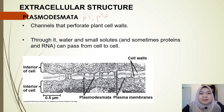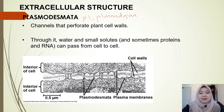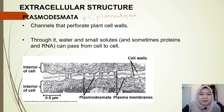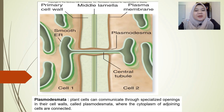Plasmodesmata is the plural noun — the singular is plasmodesma. Plasmodesmata are channels that perforate the plant cell wall and connect the cytoplasm between adjacent cells. Through these channels, water and small solutes like ions, and sometimes proteins and RNA, can pass and move from cell to cell. You can see plasmodesmata as tunnels or channels connecting two cells together.